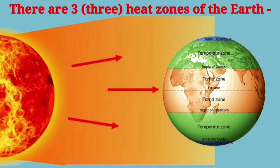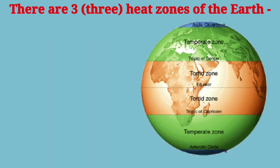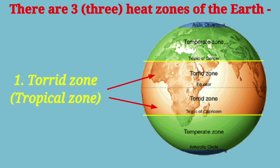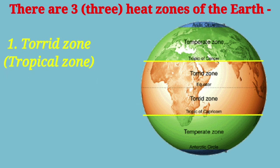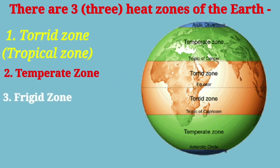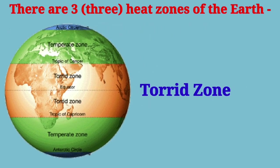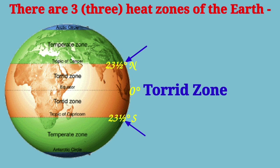Because of this, the earth is divided into three heat zones. These zones are Torrid Zone, also known as Tropical Zone, Temperate Zone, and Frigid Zone. Torrid Zone is the zone between the Tropic of Cancer and Tropic of Capricorn.